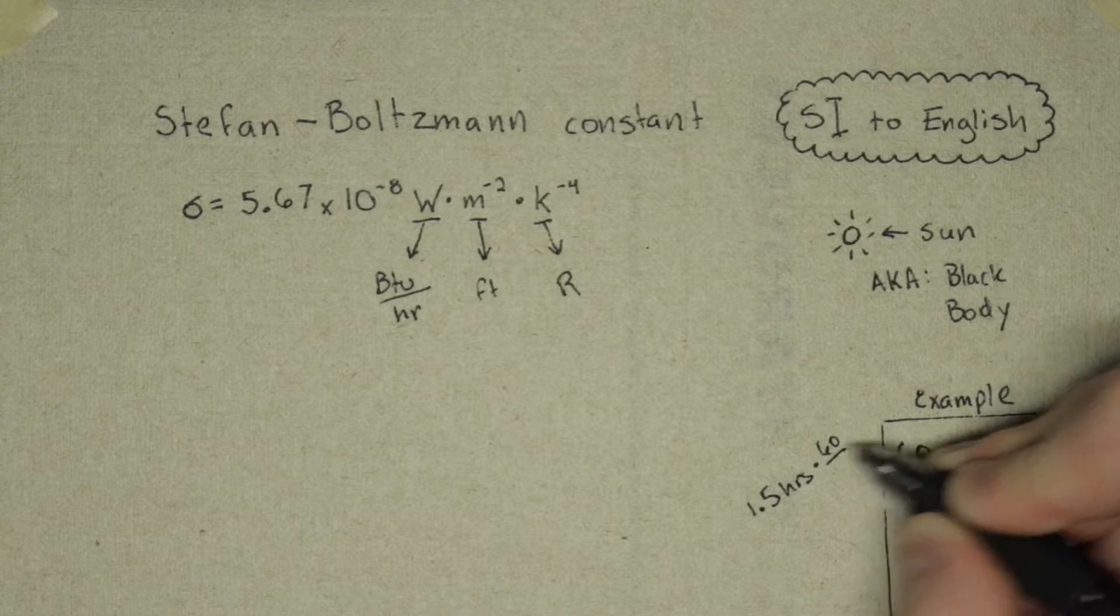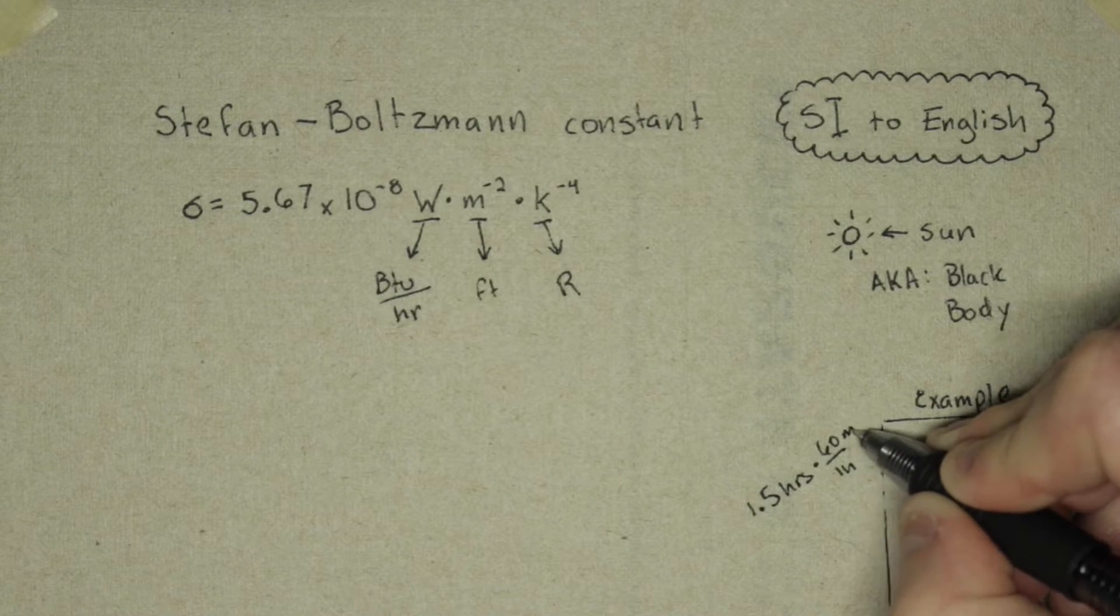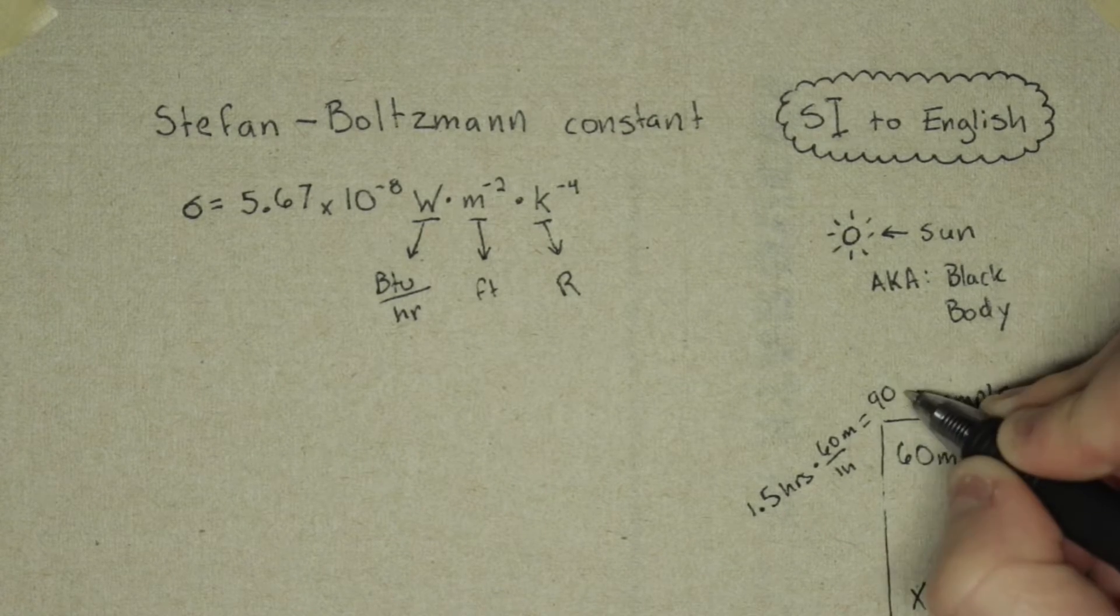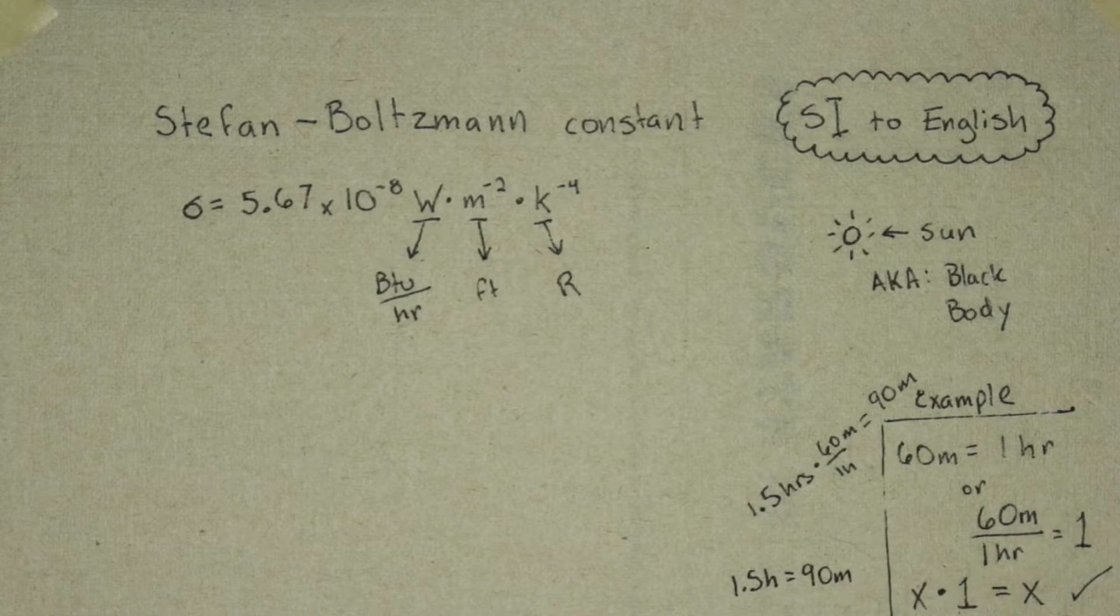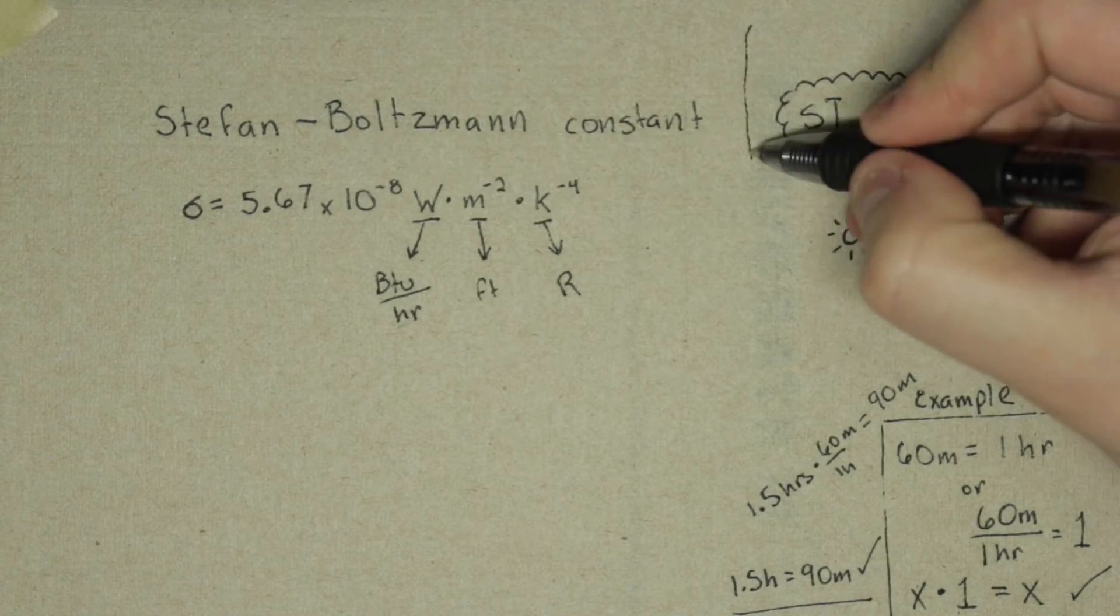But then 1 and a half times 60 is actually 90, so you have 90 minutes. So now your example is in minutes when it was in hours, but they're still the same amount of time. 90 minutes is the same as 1 and a half hours.